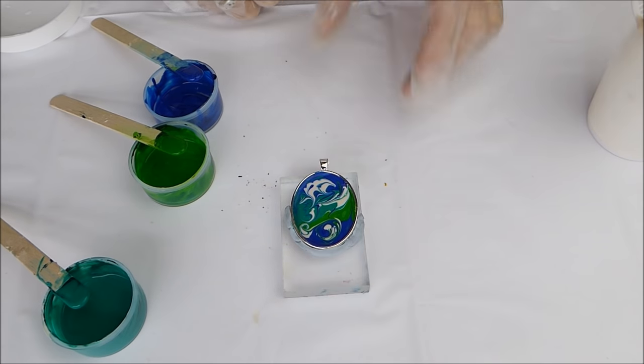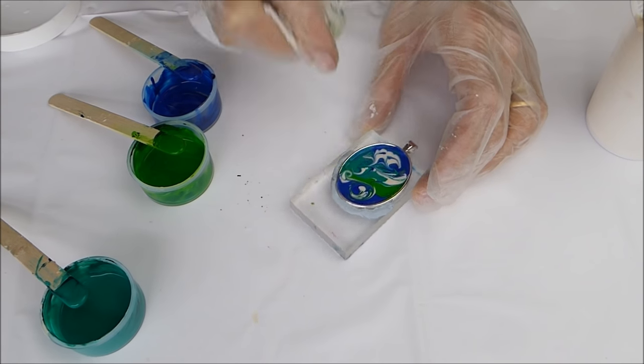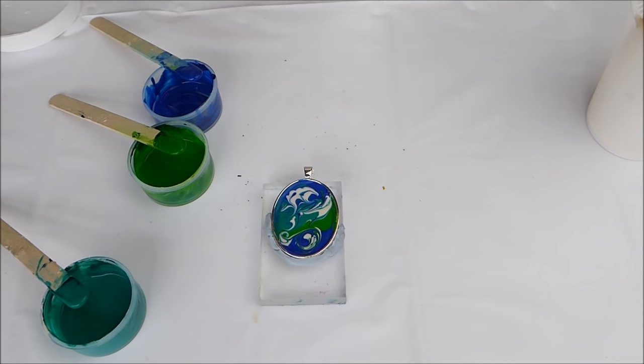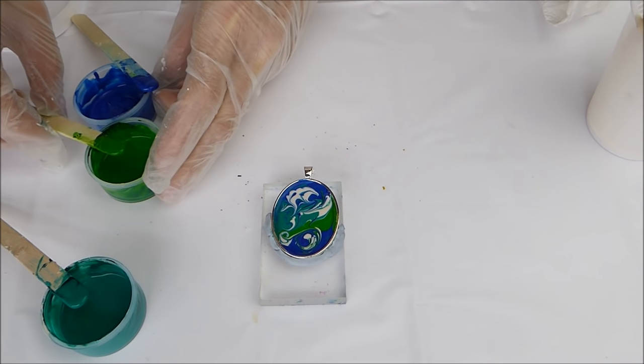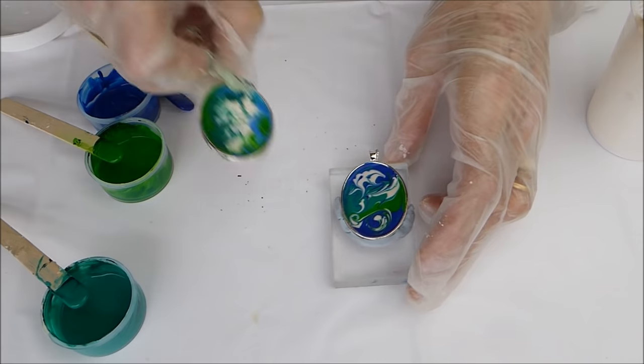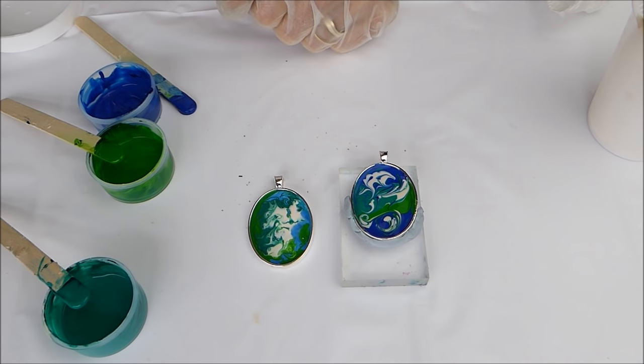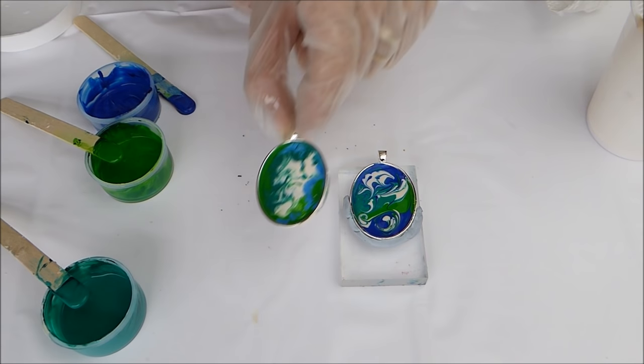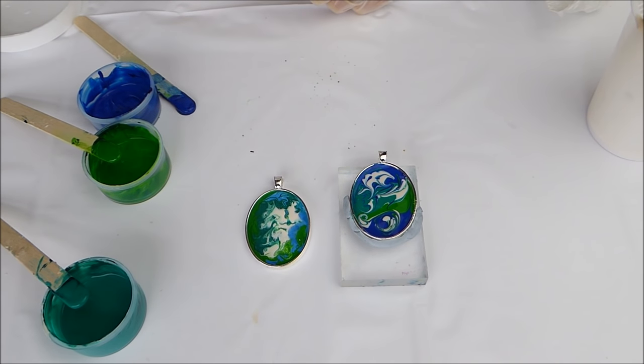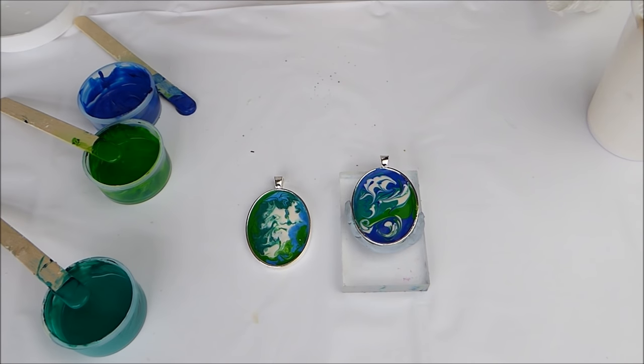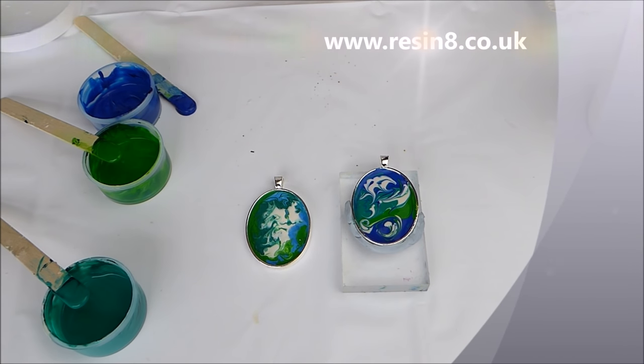And this will set very quickly. It'll be hard enough in about an hour, and half an hour if you put it somewhere warm. And once it's set, you can varnish the layer on top, or you can add some epoxy resin to give a proper deep gloss to it. All the materials can be found on our website www.resinate.co.uk. Thank you.